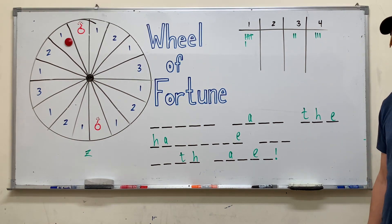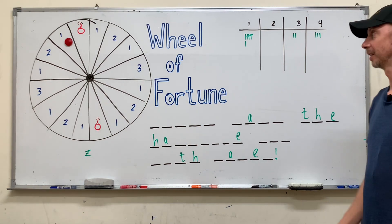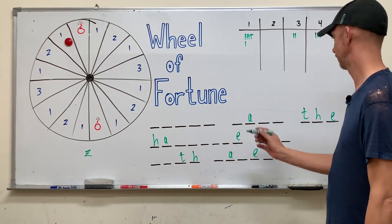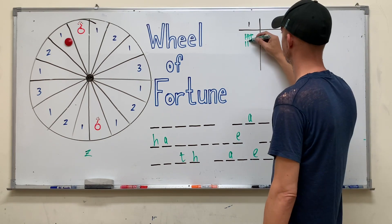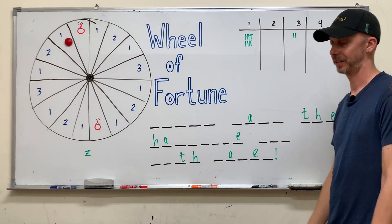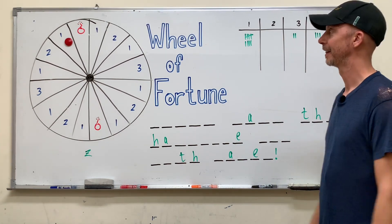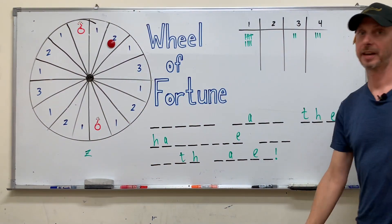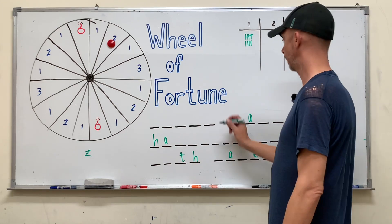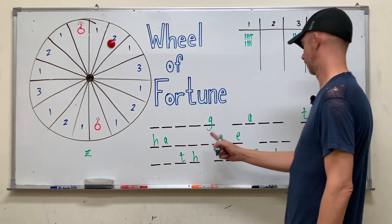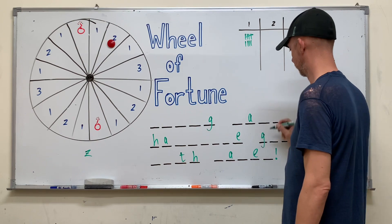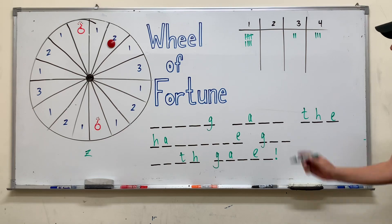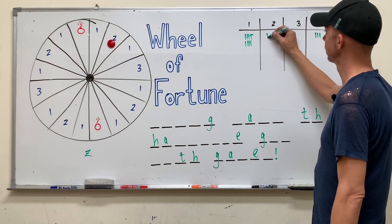We'll do one more and then leave it to the viewers to solve. Team two, roll the dice — you get a three. Let's say they say the letter G. One G. Three times two is six points.